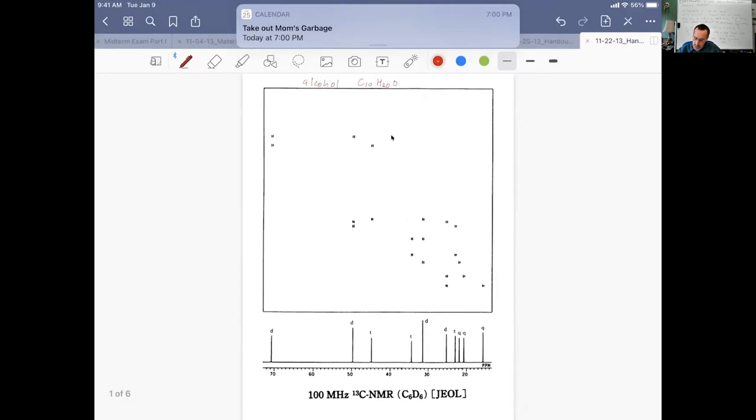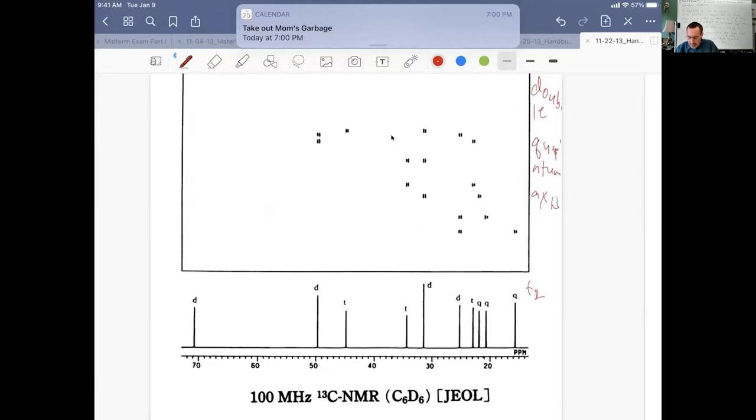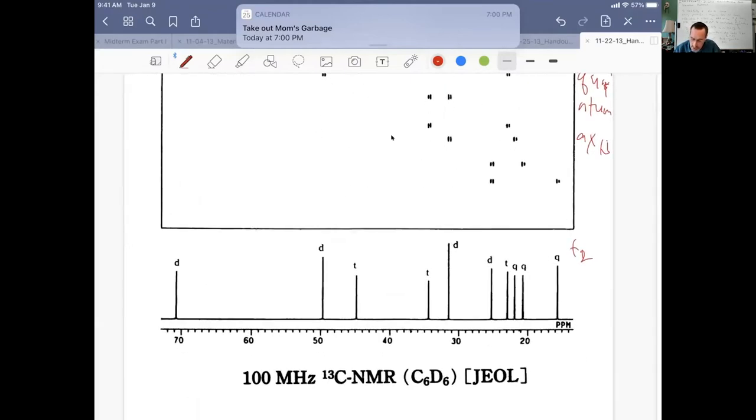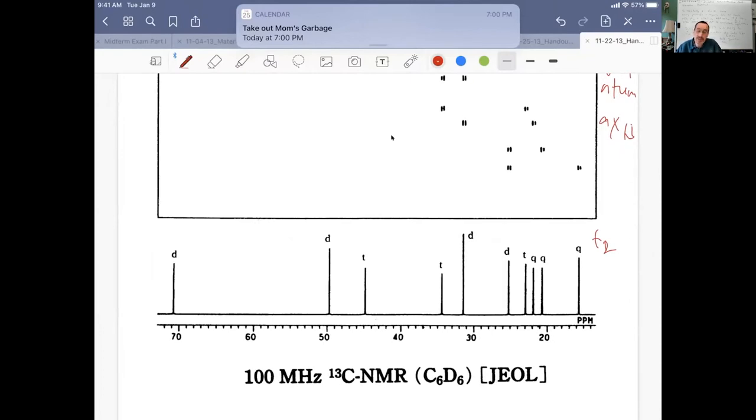This is what we call our double quantum axis. This direction, our F1 dimension, is our double quantum axis. And this axis here, our F2 dimension, is our carbon-13 dimension. We've plotted the 1D spectrum. This notation is an old notation from carbon-13 NMR where you would do an off-resonance decoupled experiment.